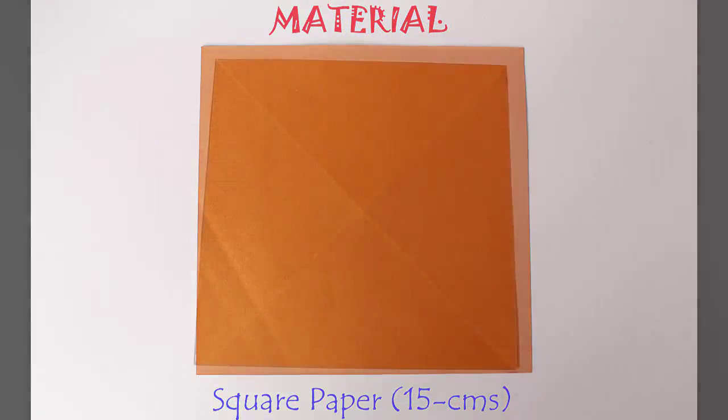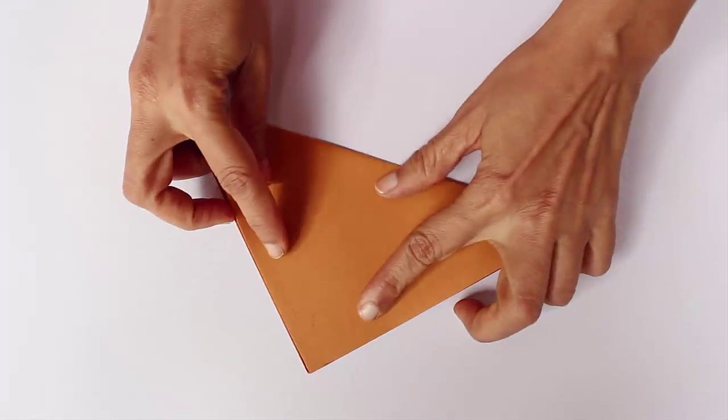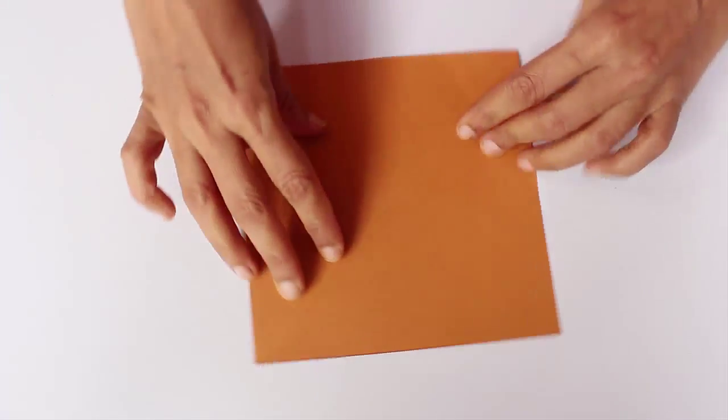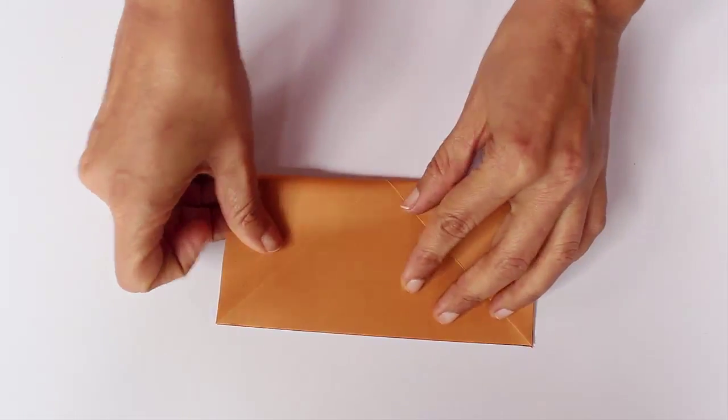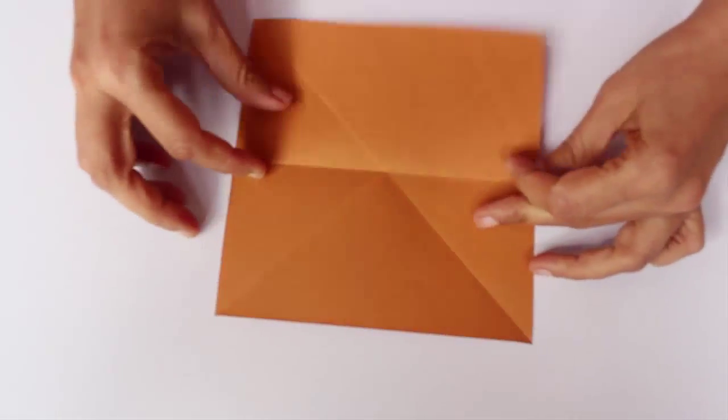Take a square which is 15 centimeters on the edge, and then fold both the diagonals, both in the same direction, and now fold the middle line.